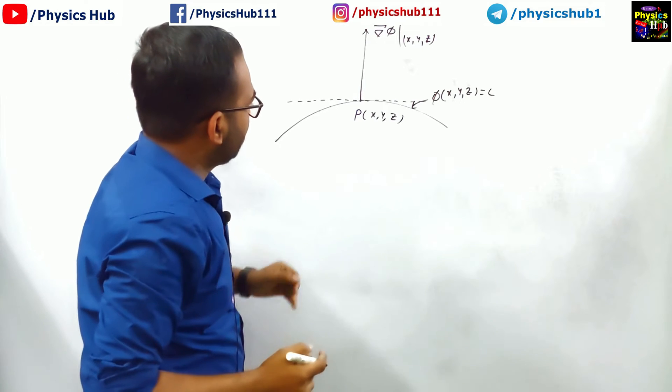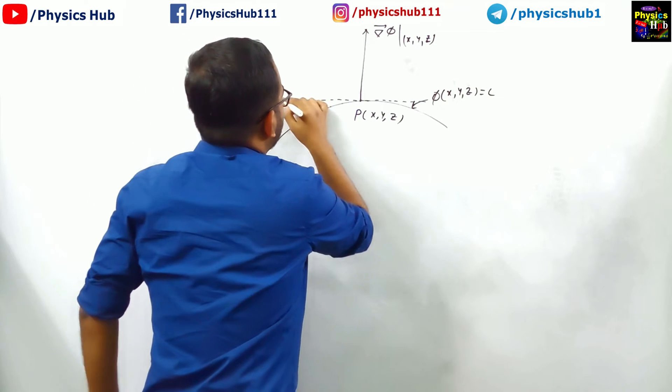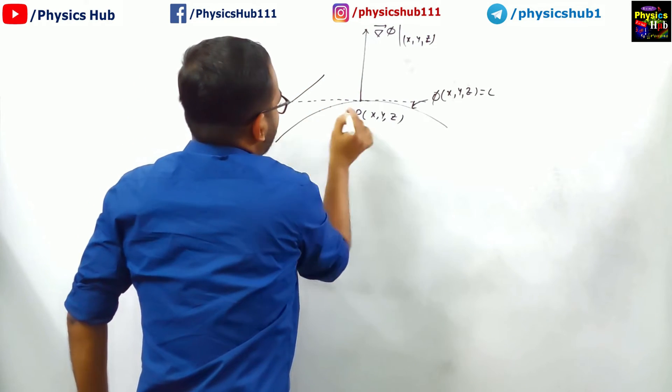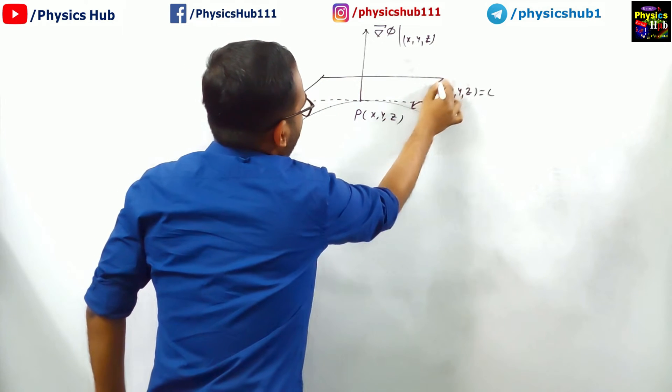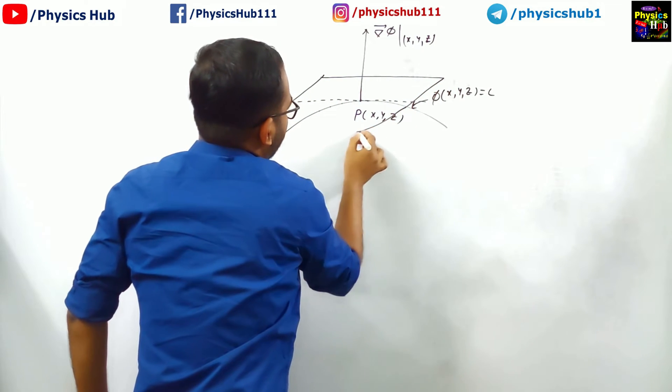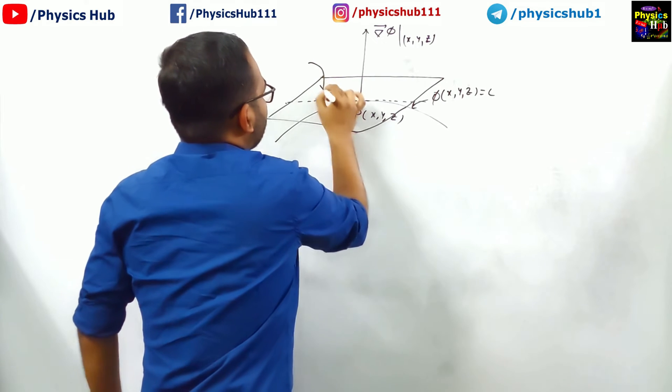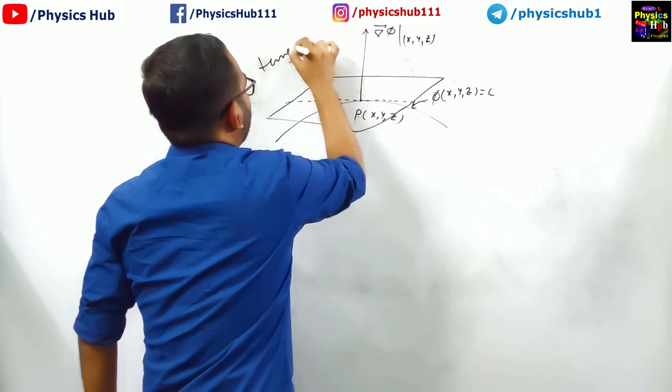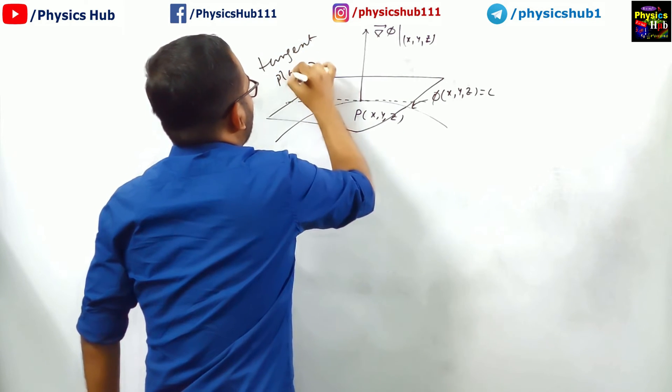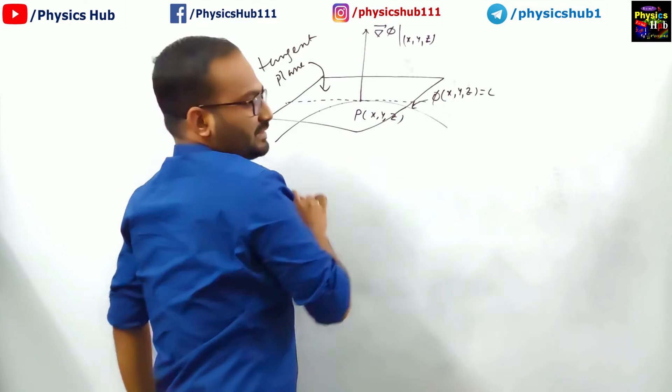Now, you have to find out the equation of the plane. This is the tangent. The plane will contain this tangent. This is the tangent plane that we have to find out. What will be the equation of this tangent plane?